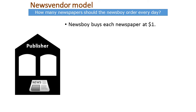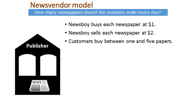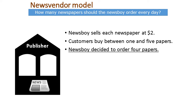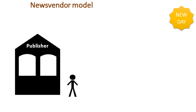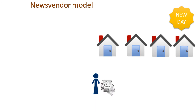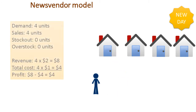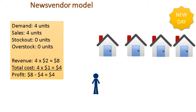Here is the typical situation for the Newsvendor model — this is the example of the Newsboy. The Newsboy every day buys newspapers from the local publisher at $1 per unit, then sells those newspapers to local customers at $2 per each paper. The problem is that it's hard to predict how many units the customers would buy today. For example, today customers bought 4 units, so we had 4 units of sales. There was no stock-out and no overstock, and our revenue was $8 with total cost of $4, meaning we got $4 profit today.